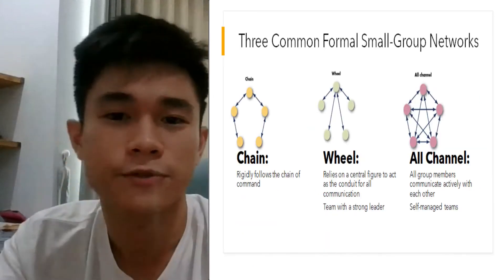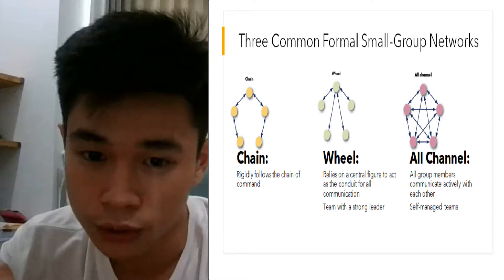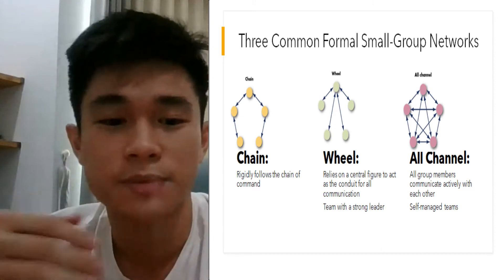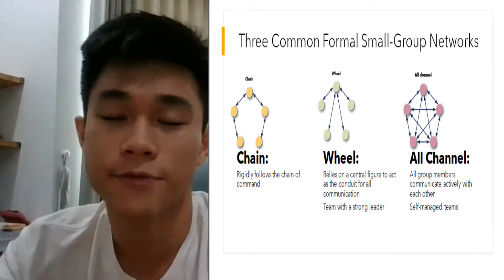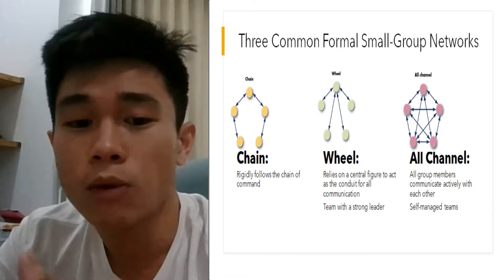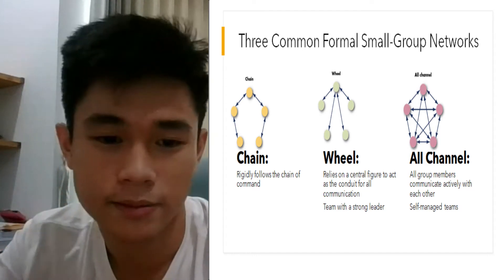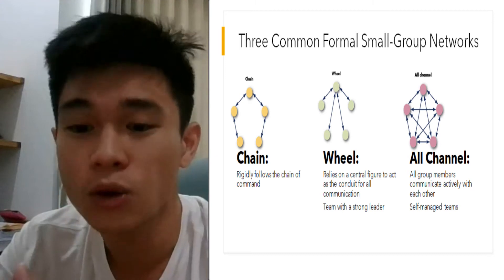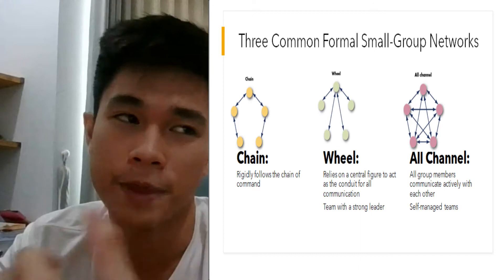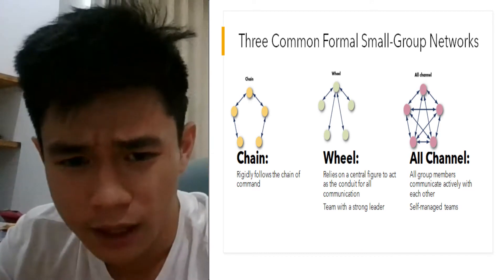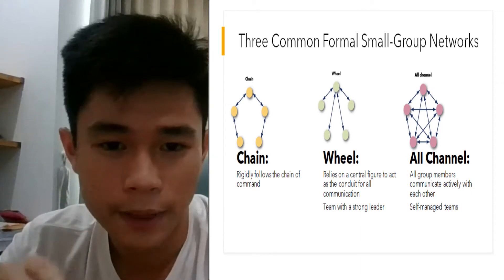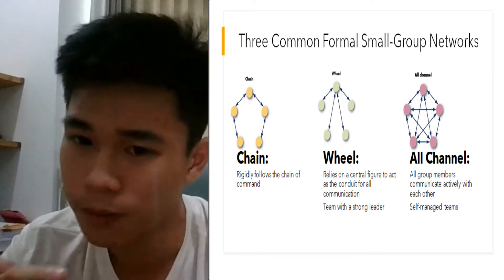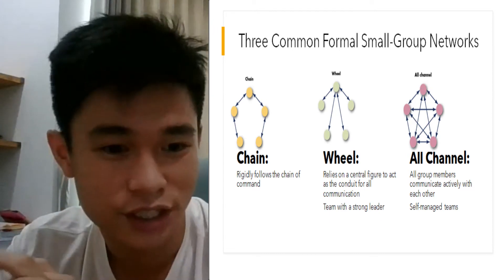In the next slide, we look at three common forms of small group networks: chains, wheel, and all channels. With chains, it is very formal and follows a strict chain of command — the employee only knows who is next in the chain and that is where they give and get information. The wheel has a leader who controls all communications and gathers information from all team members. In all channels, people communicate actively with each other with no formal channel or single person in control, which works best in self-managed teams.